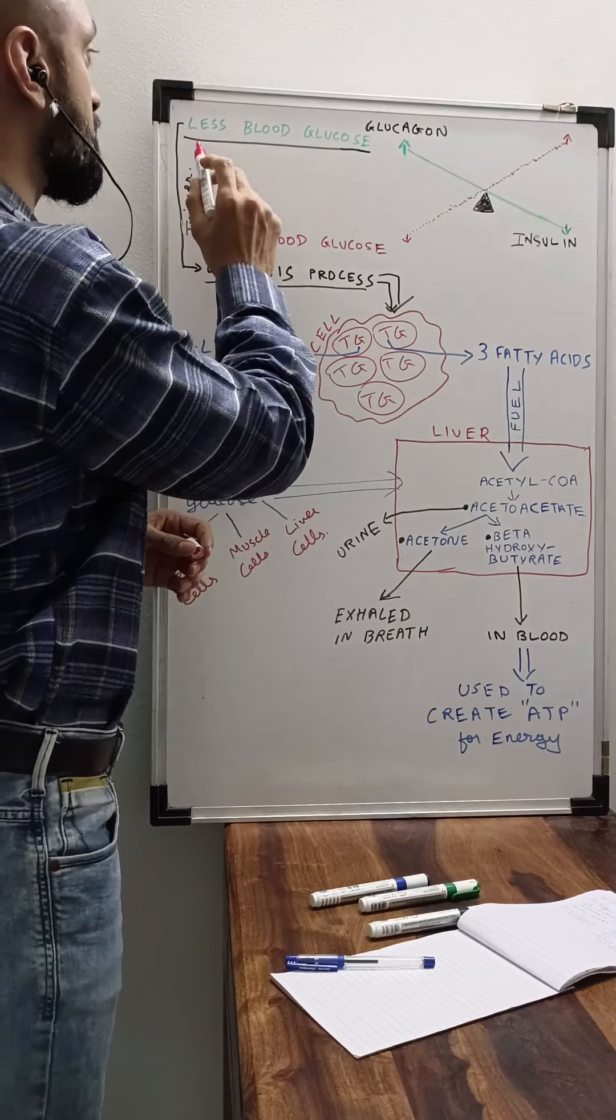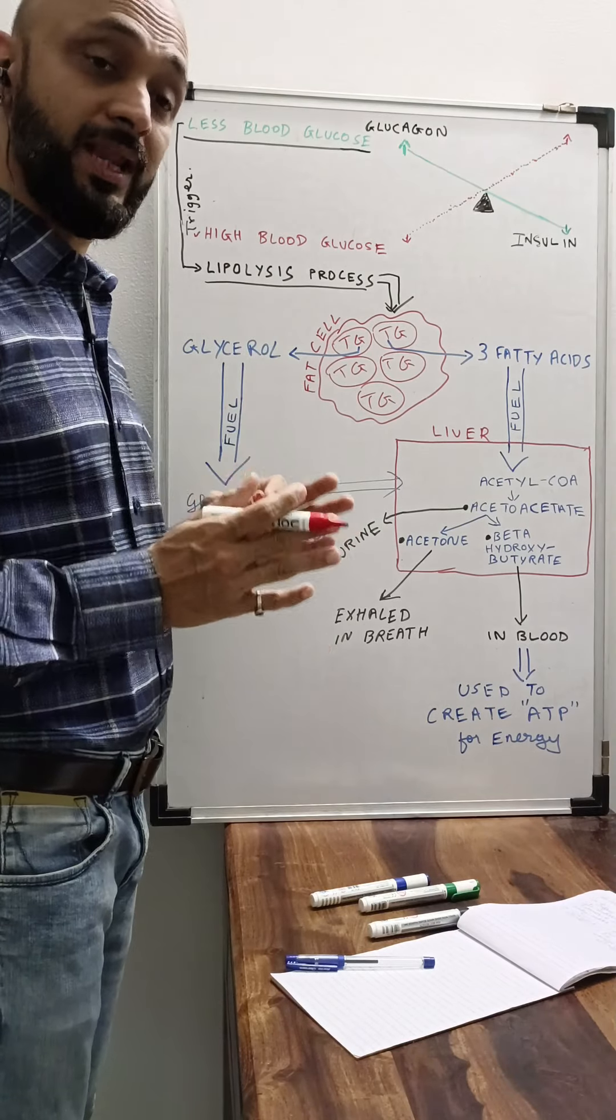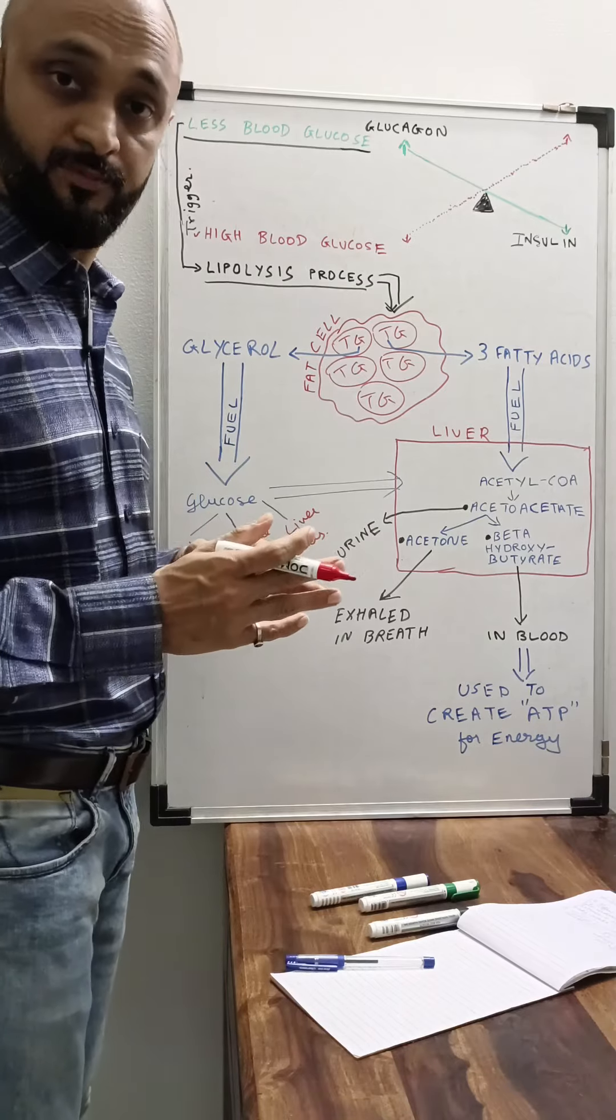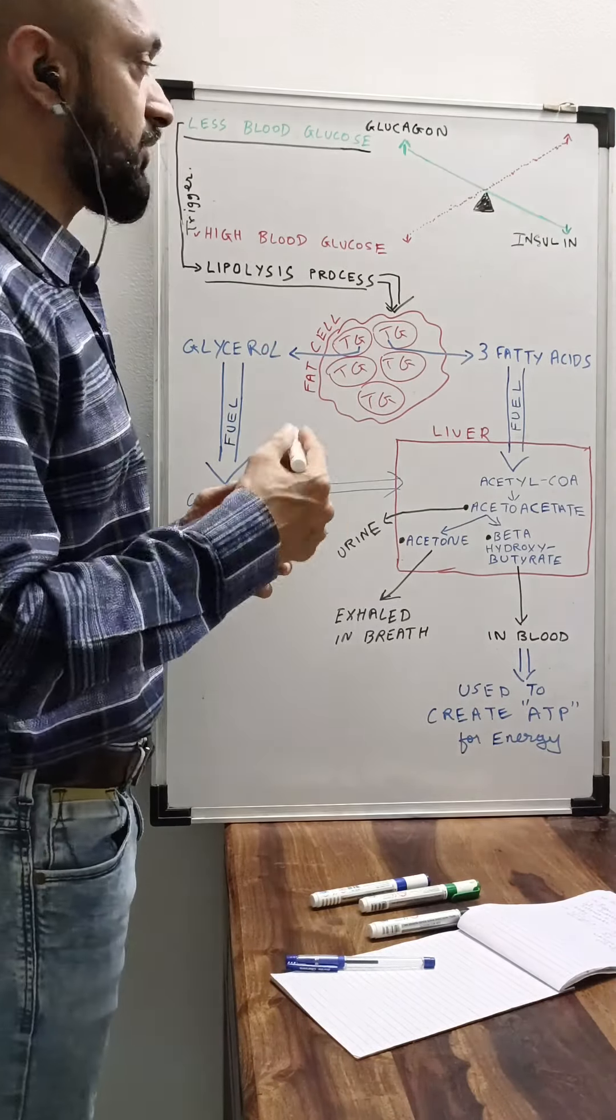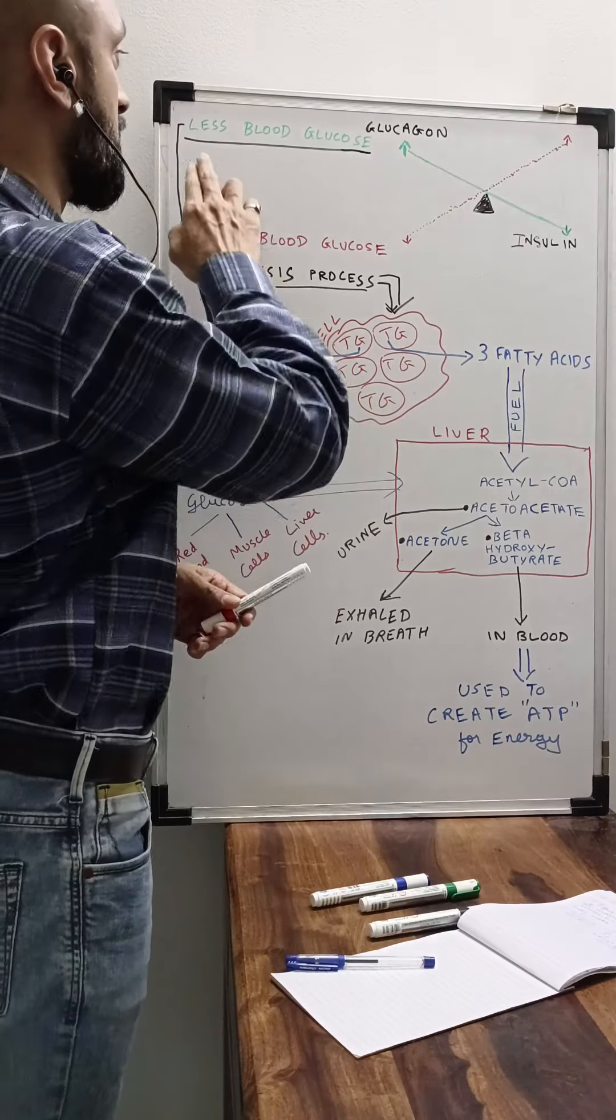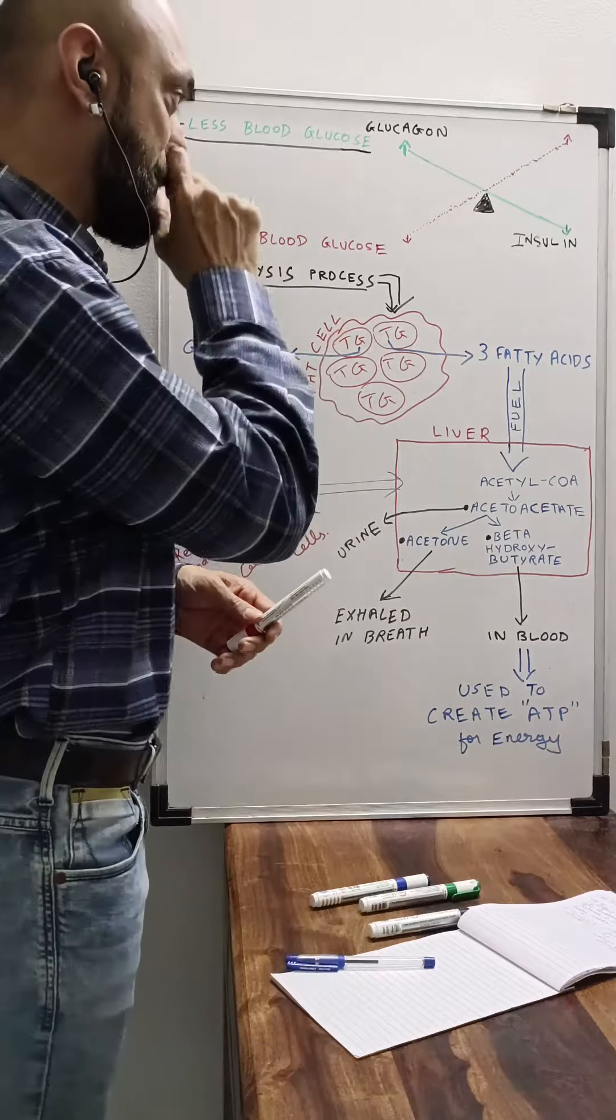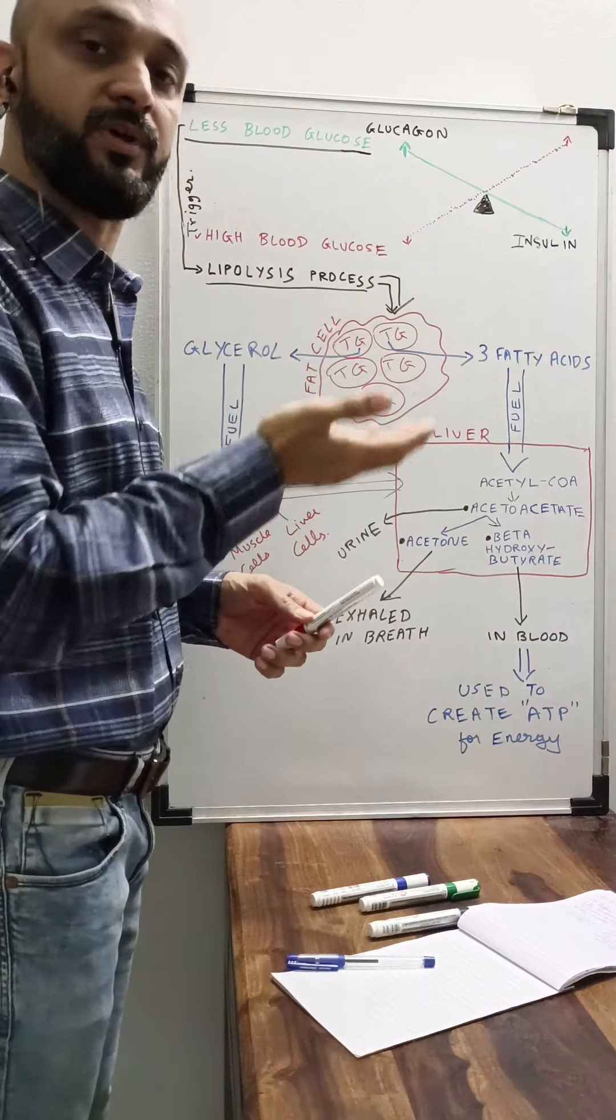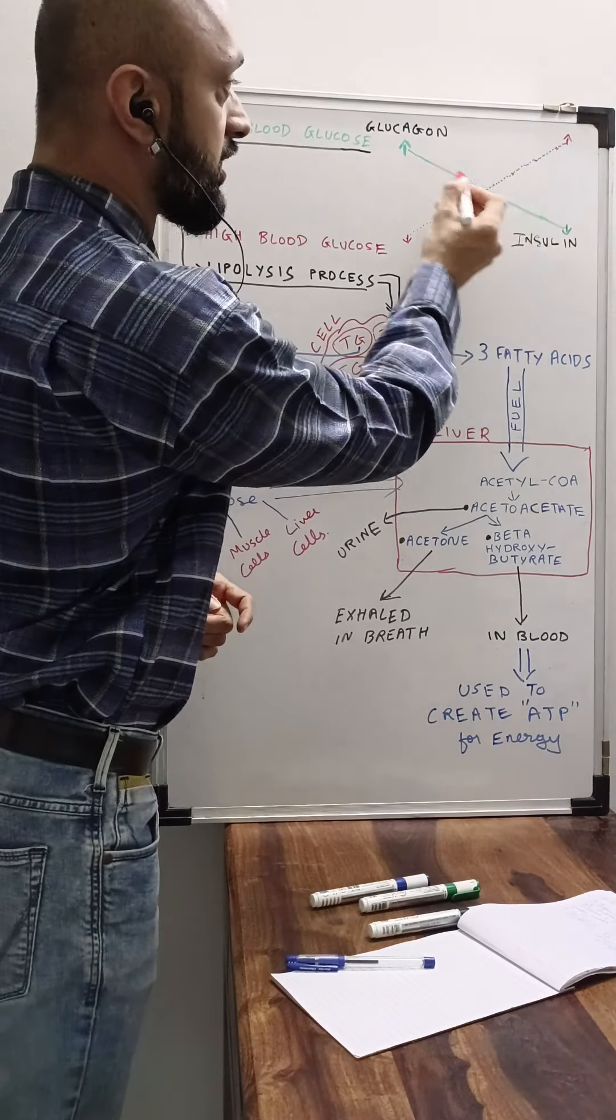Our body has two hormones which balance the glucose level in the blood. Now let's talk about the two situations. In one situation the blood glucose is less, and in the other situation the blood glucose elevates, it's very high. Let's talk about this green part, which is the good situation where blood glucose level is going low.